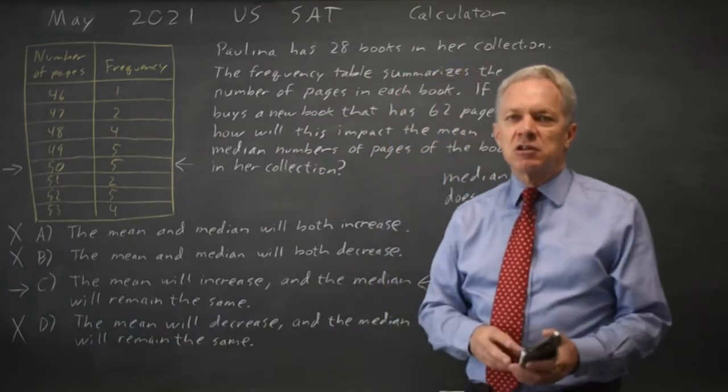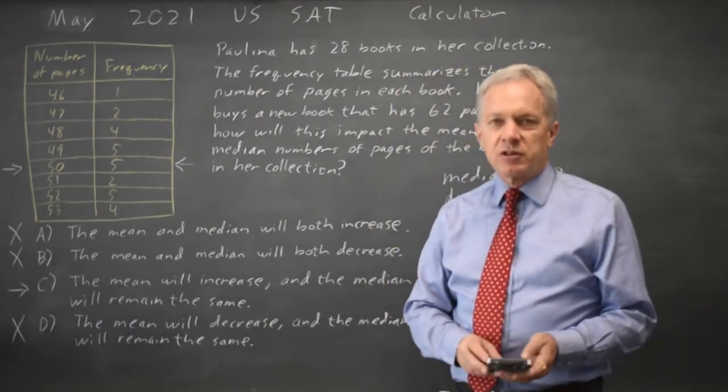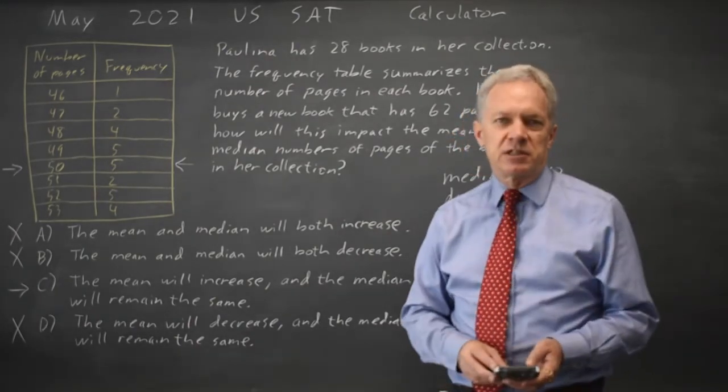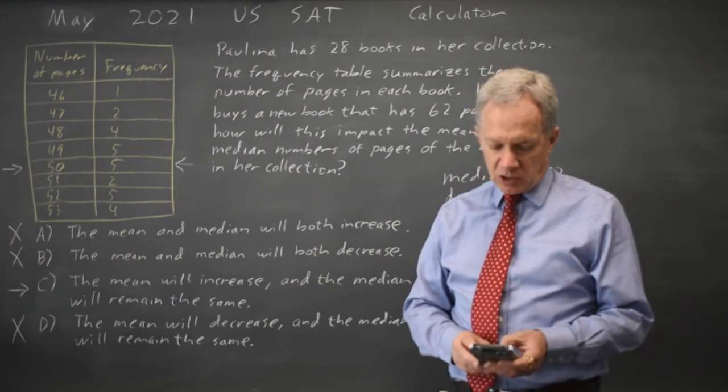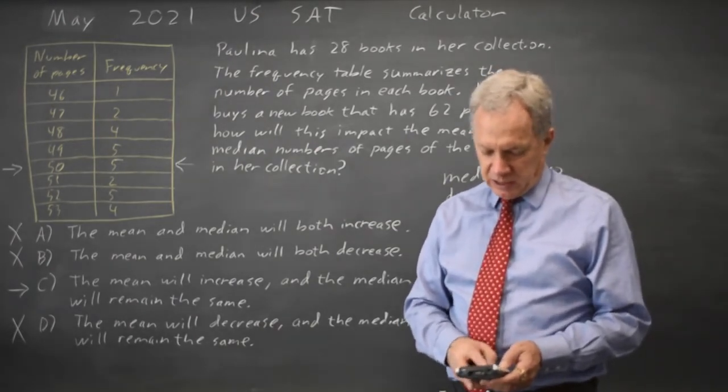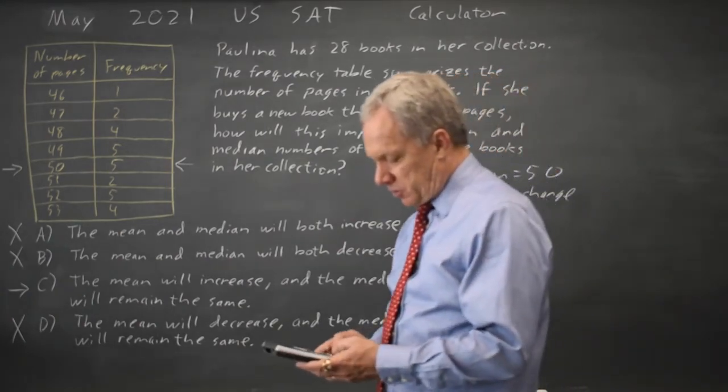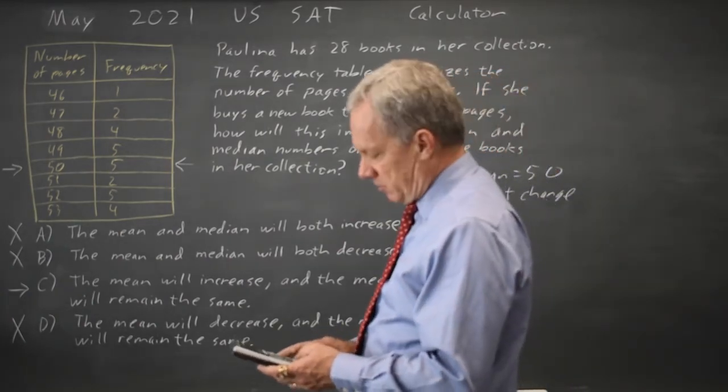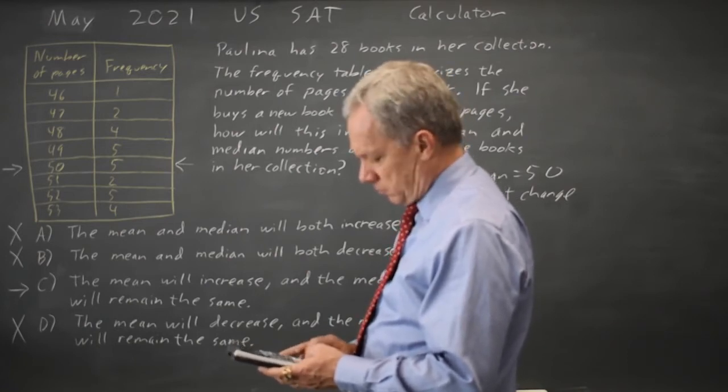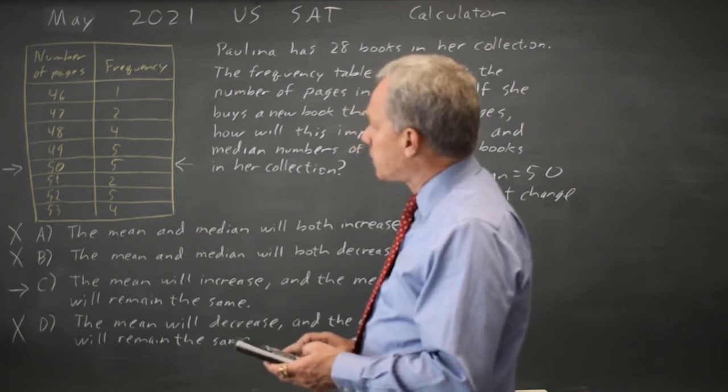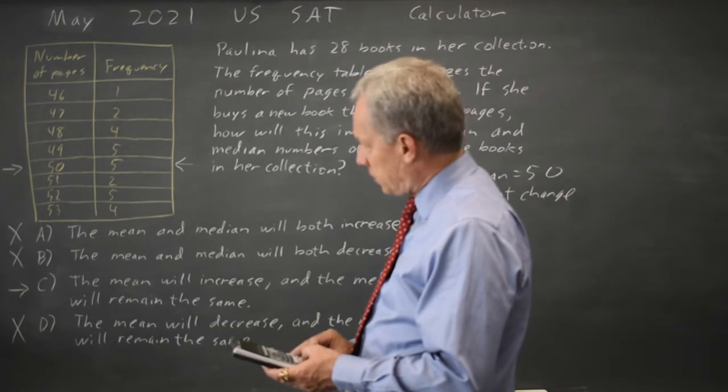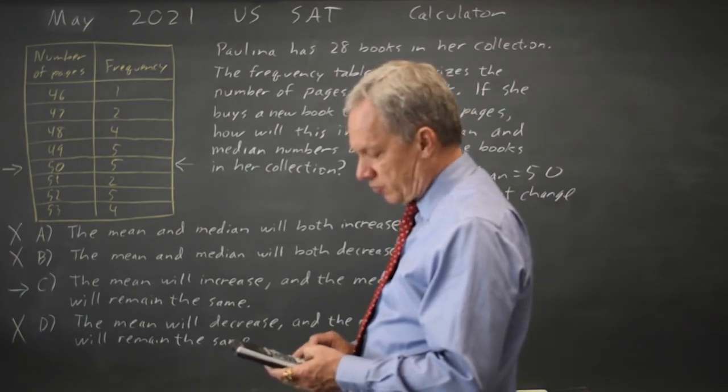Alternatively, it's slower, but you can figure the mean by adding up all the numbers and dividing by 28 and doing the same thing dividing by 29. Or on my graphing calculator, stat, edit, I can input the frequency table, which will take a minute: 46, 47, 48, etc. And then the frequency is 1, 2, 4, 5, 5, 2, 5, 4.